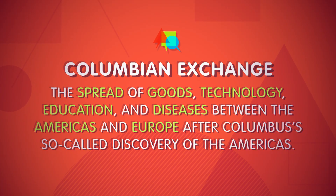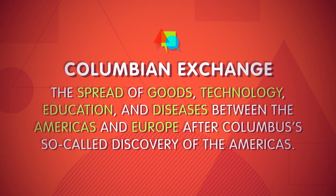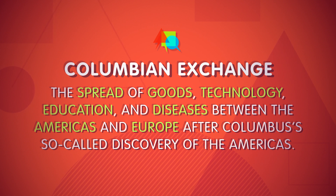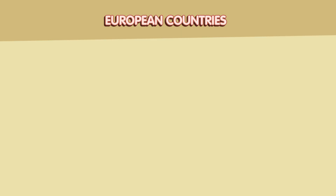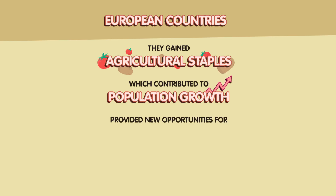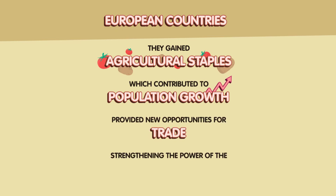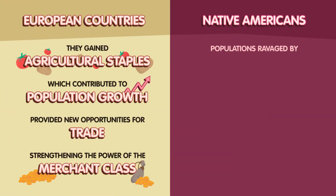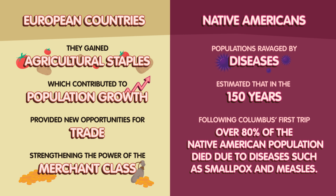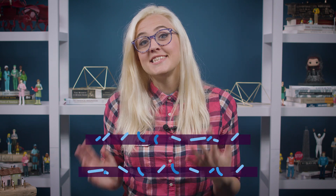The first event is known as the Columbian Exchange. This refers to the spread of goods, technology, education, and diseases between the Americas and Europe after Columbus's so-called discovery of the Americas. This exchange worked out pretty well for the European countries — they gained agricultural staples like potatoes and tomatoes, which contributed to population growth and provided new opportunities for trade, while also strengthening the power of the merchant class. But the Columbian Exchange worked out much less well for Native Americans, whose populations were ravaged by the diseases brought from Europe. It's estimated that in the 150 years following Columbus's first trip, over 80% of the Native American population died due to diseases such as smallpox and measles.